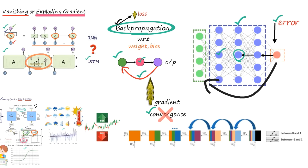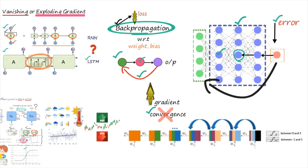Gradient represents the rate of change of the loss function, and it is evaluated with respect to network parameters. During backpropagation in RNN, some gradient values in some layers may increase abruptly — but this will never happen in LSTM.